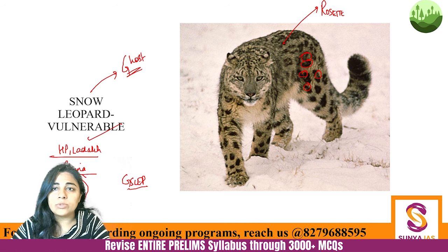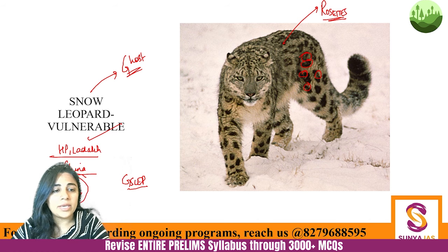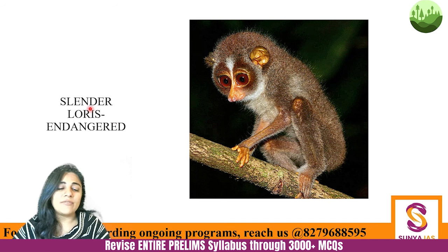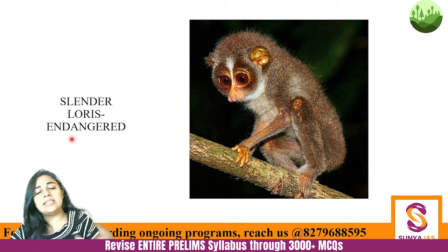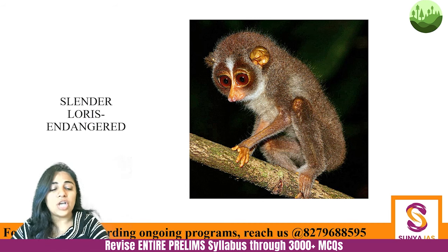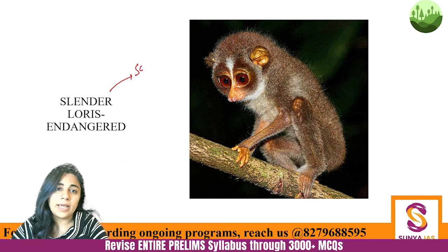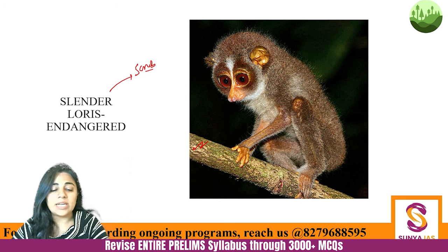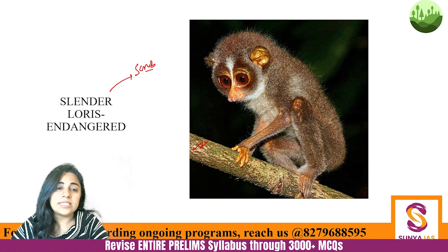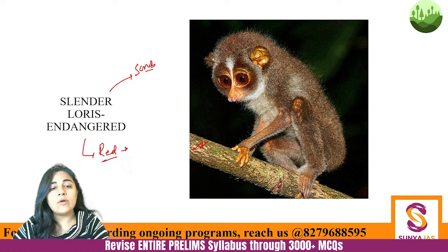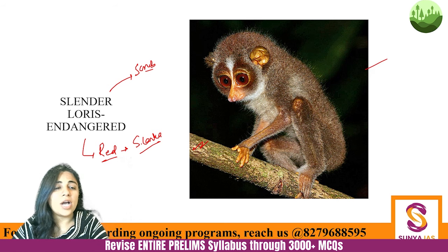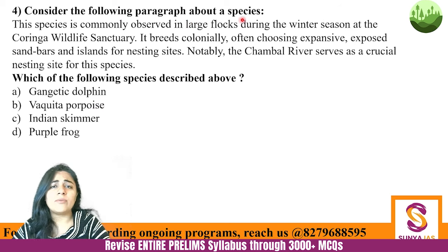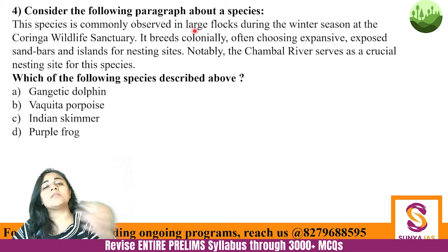Just like tigers, every snow leopard has a unique pattern of black spots called rosettes. The slender loris is a very cute primate — endangered and very shy. They are found in scrublands, as visible from their habitat pictures. There is a variety called the red slender loris which is found only in Sri Lanka.